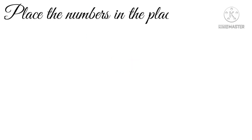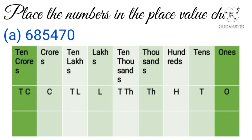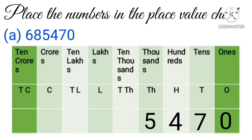Now we will learn to place numbers in the place value chart. The number is 6, 8, 5, 4, 7, 0. The last digit zero comes in ones place, seven in tens place, four in hundreds place, five in thousands place, eight in ten thousand place, and six in lakh place. We read the number as six lakh, eighty-five thousand, four hundred and seventy.